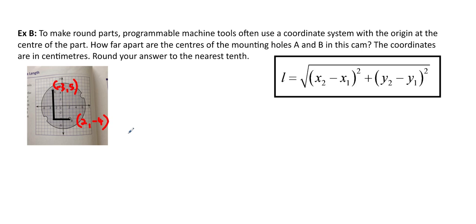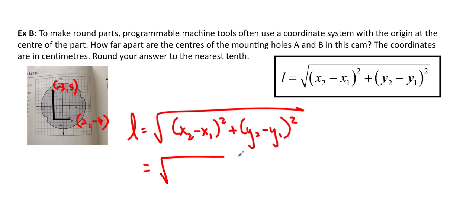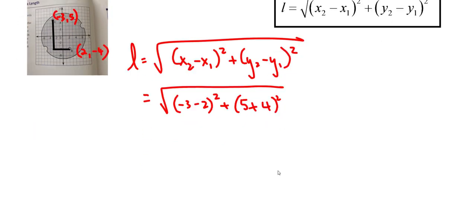Length is equal to, and remember you always have to write the formula out, √((x₂ - x₁)² + (y₂ - y₁)²). By the way, it doesn't matter which one is x₂ and which one is x₁, which one is y₂, which is y₁, just as long as you keep it straight. So if this is first, then this one will be first. So (-3 - 2)² + (5 - (-4))², so I'll put + 4².